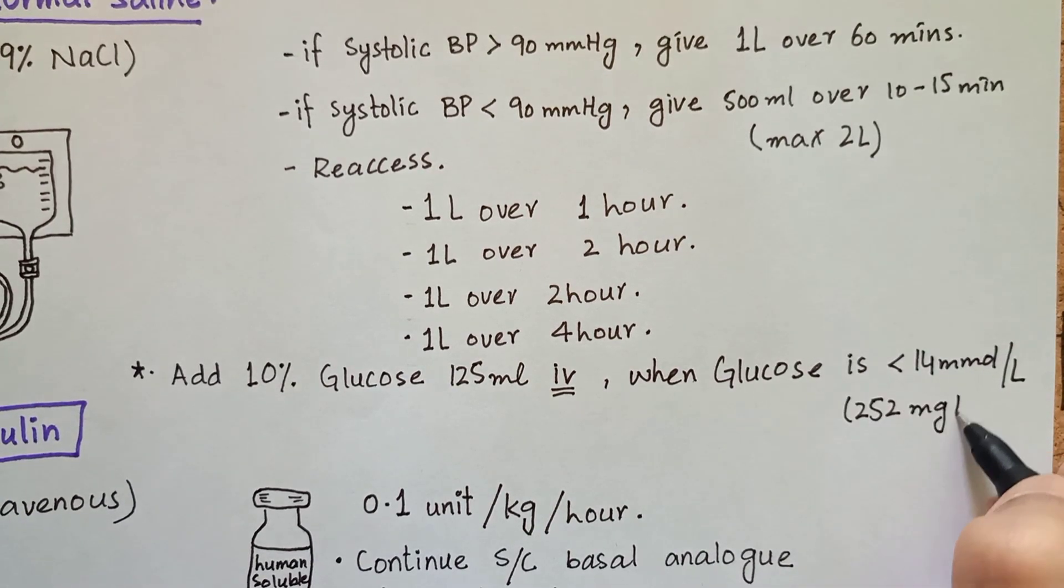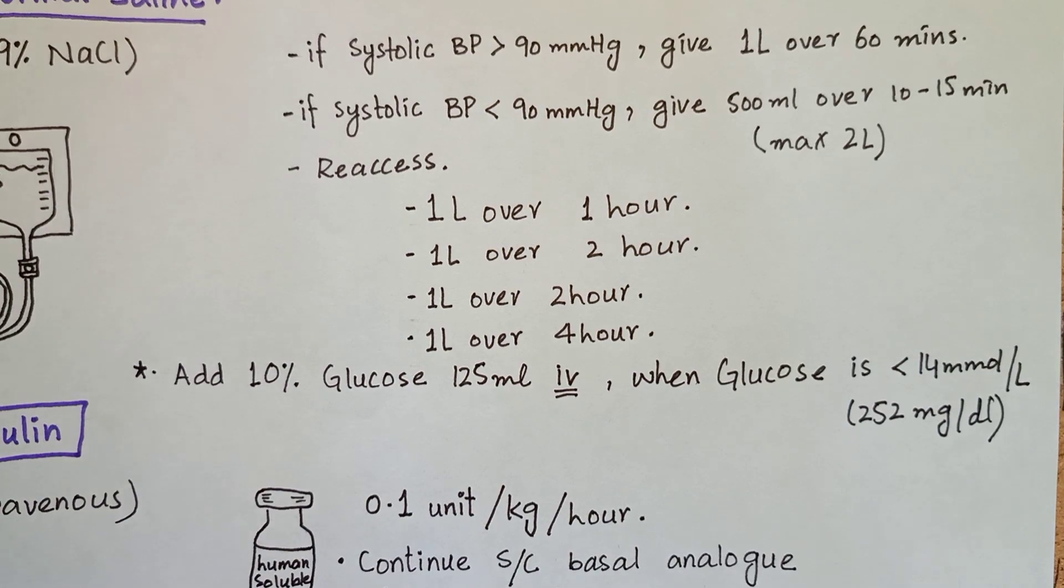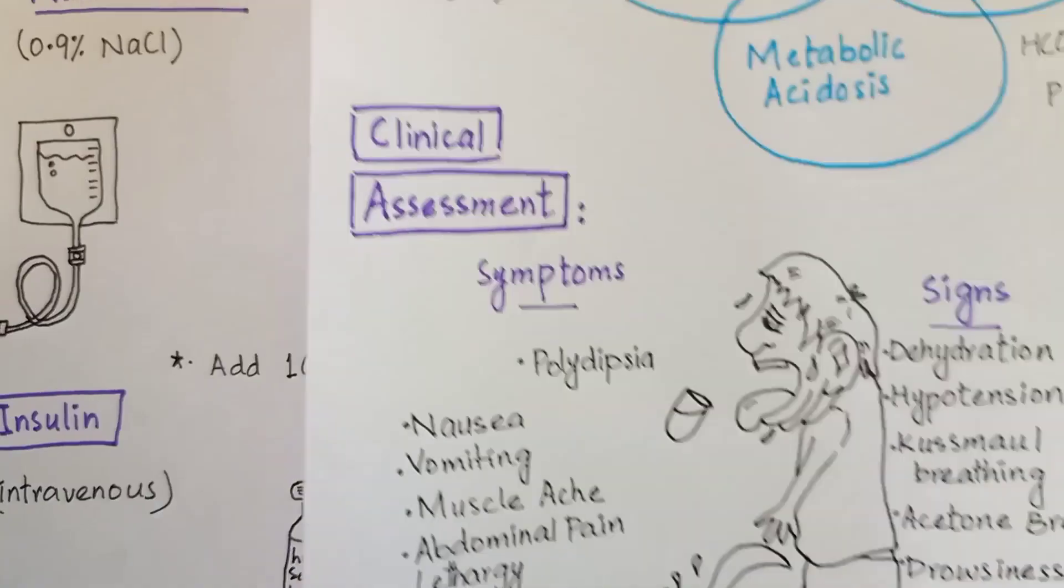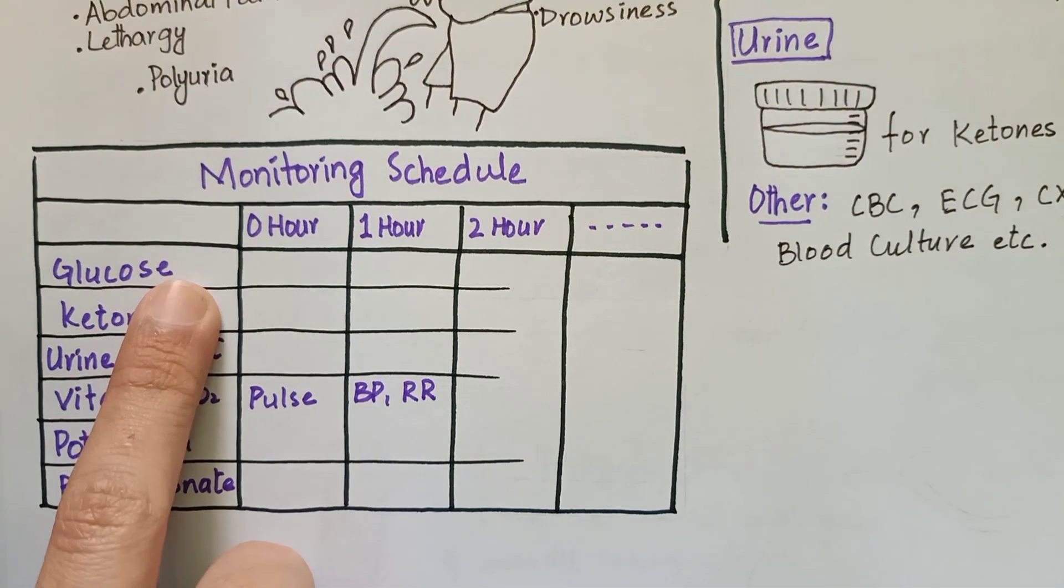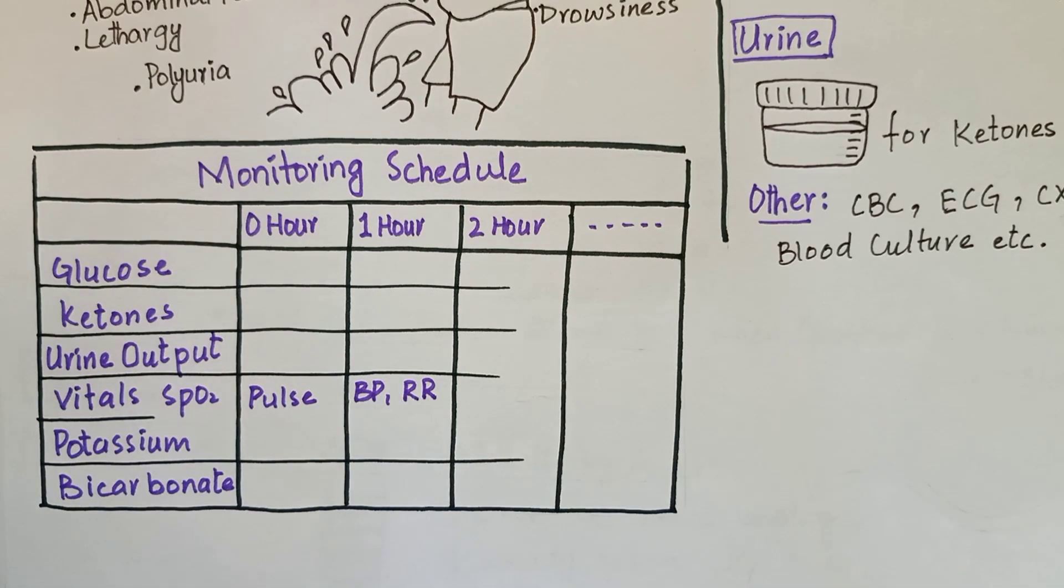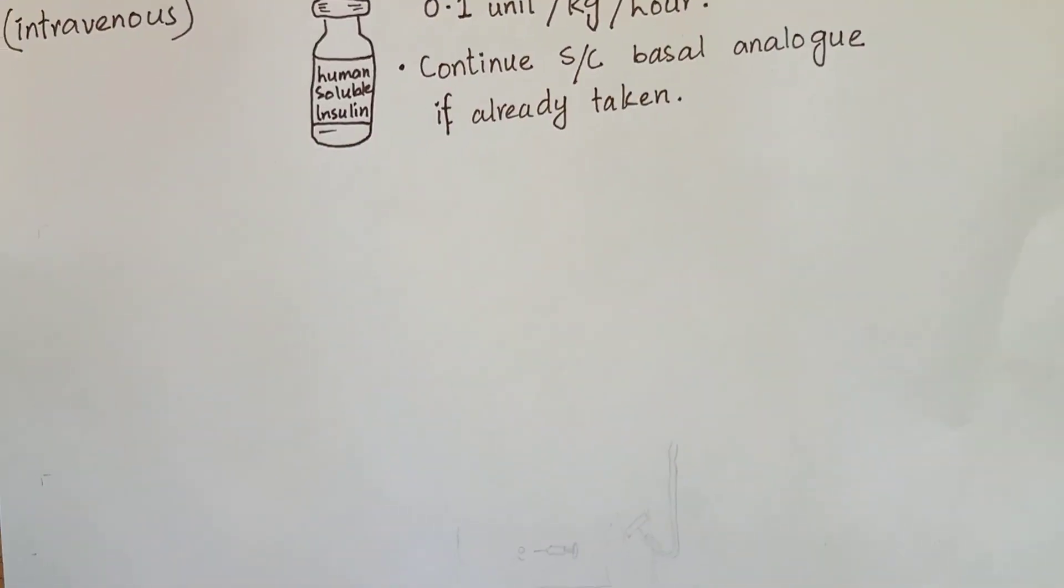That will be around 252 mg per deciliter. Your hourly monitoring chart will tell when to add glucose. You will also consider potassium chloride infusion according to lab reports.